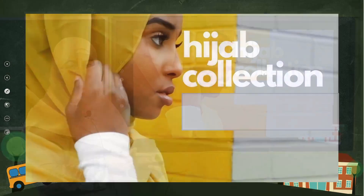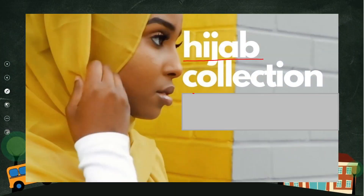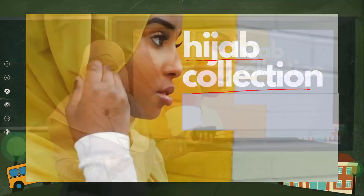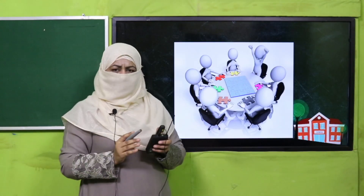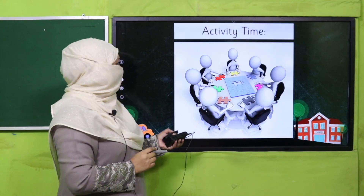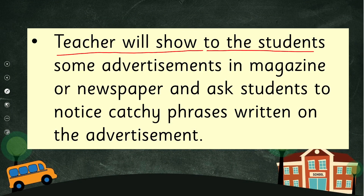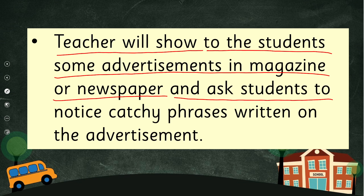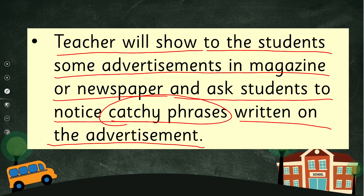Here you can see — what is the caption? 'Hijab Collection.' Are you clear with the concept? Now let's practice through an activity. The teacher will show students some advertisements in a magazine or newspaper and ask students to notice catchy phrases written on the advertisement. You may bring a magazine or newspaper to class, or if possible, take students to the library to show them different material with different types of captions. Pause the video, enjoy this activity, and then come back.